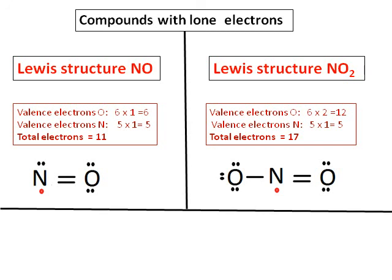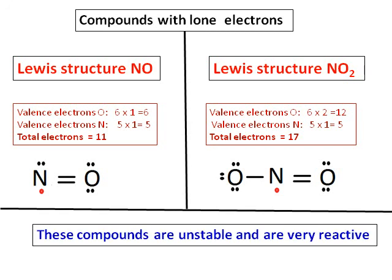Both NO and NO2 have unstable octets with a single electron around them. Compounds with unpaired electrons are very unstable and hence very reactive.